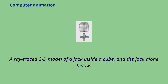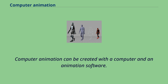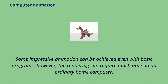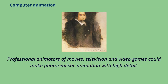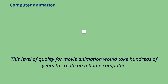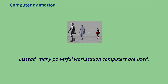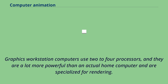Computer animation can be created with a computer and animation software. Some impressive animation can be achieved even with basic programs; however, the rendering can require much time on an ordinary home computer. Professional animators of movies, television and video games could make photorealistic animation with high detail. This level of quality for movie animation would take hundreds of years to create on a home computer. Instead, many powerful workstation computers are used. Graphics workstation computers use 2–4 processors and are far more powerful than a home computer, specialized for rendering.